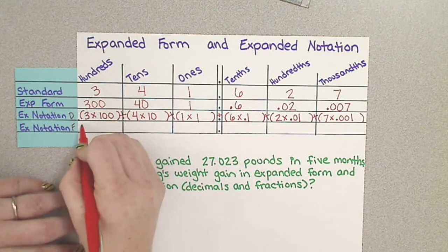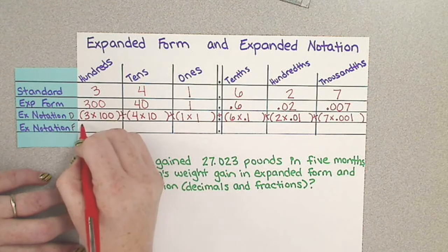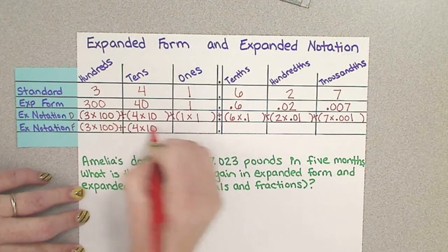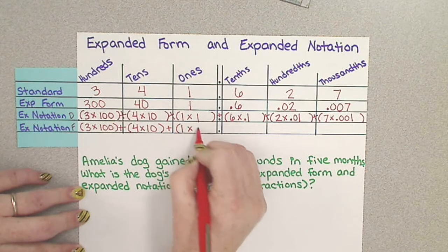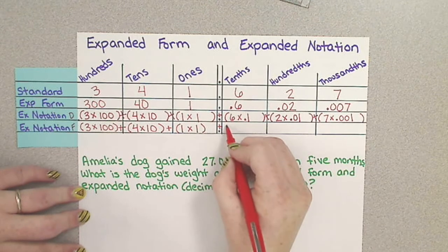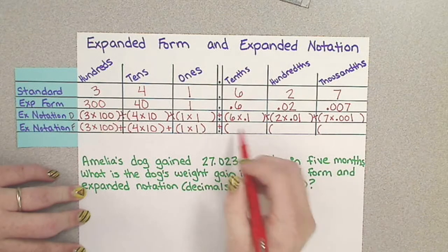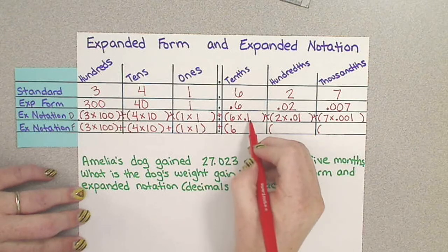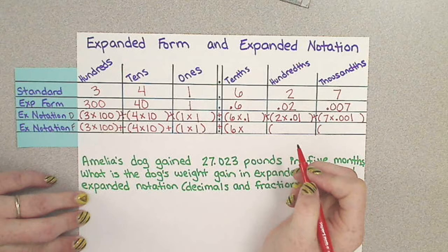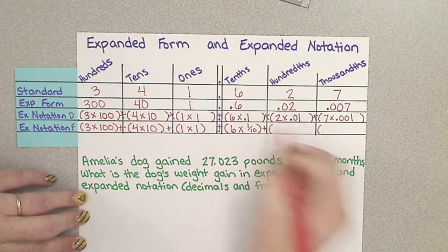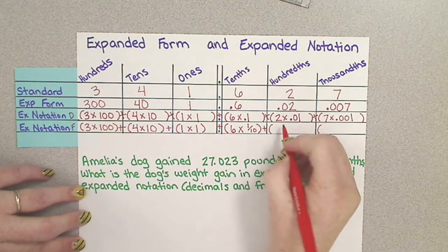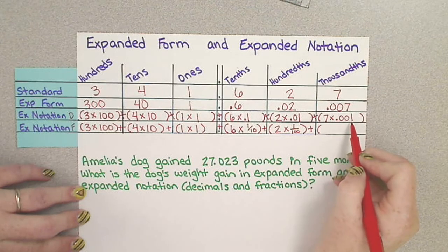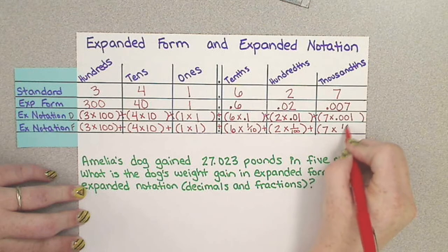Now we need to look at this with fractions. Well, there's really no fraction for your whole number, so they're going to stay 3 times 100 plus 4 times 10 plus 1 times 1. Now this is when we're getting into our fractions. We're still going to have 6 because we have 6 in this place, but instead of 1 tenth written as a decimal, I need to multiply it by 1 tenth written as a fraction, which is simply 1 over 10. Plus 2 times 1 hundredth, which is 1 over 100, plus 7 times 1 thousandth, 7 times 1 over 1000.